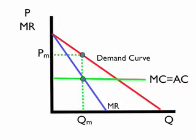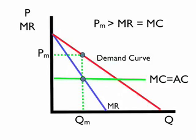Now we can characterize some of the attributes of this monopoly outcome. Most importantly, the monopoly price is going to be greater than the marginal revenue, which is equal to marginal cost. That is to say, the monopolist will charge a price greater than the marginal cost of producing it.